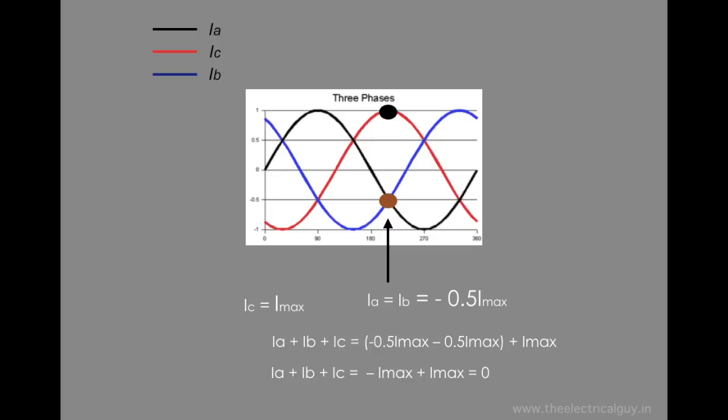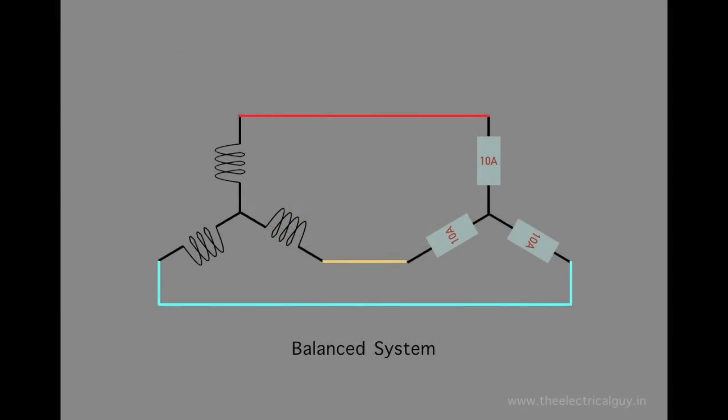And hence, we can say that there is no current flowing through the neutral and we can actually remove the neutral conductor from the circuit without affecting the voltage and current. This is only applicable for perfectly balanced system, that is system with identical load on each phase. And we can call such system as a balanced system.